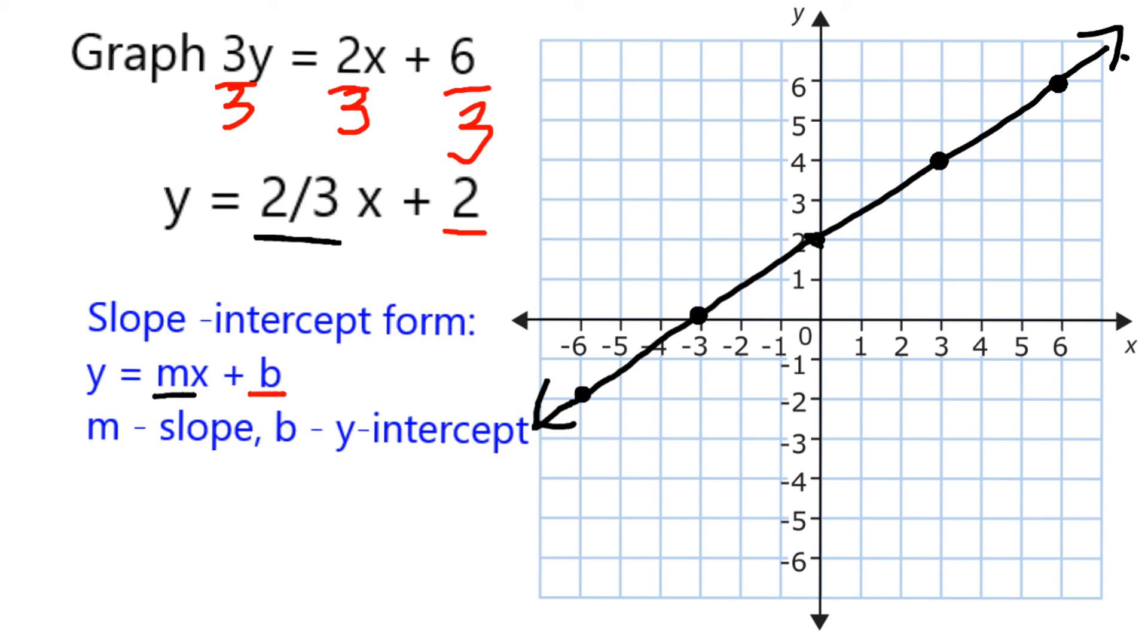So I put a line as straight as I can through all these points. Arrows on the end indicate that it goes on forever. And remember what this represents. Any ordered pair on this line, any xy value, is going to make a true solution to my original equation.